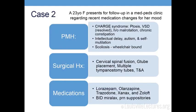My second case is a 23-year-old female established in our clinic, coming in for follow-up with her mom and friend. She has a diagnosis of CHARGE syndrome — an abbreviation for the major defining characteristics: coloboma, heart defects, choanal atresia, growth retardation, and genital and ear abnormalities. She's had ptosis of the left eye, a prior VSD now resolved, a history of malrotation, a G-tube placement, and chronic constipation. She also suffers from moderate to severe intellectual delay, global developmental delay, scoliosis, and is largely wheelchair-bound. She also has a history of autism, self-mutilating behavior, and insomnia.